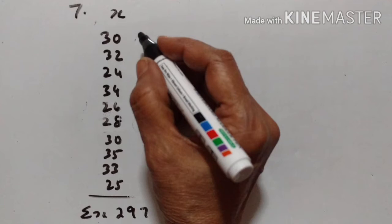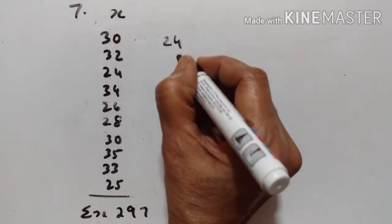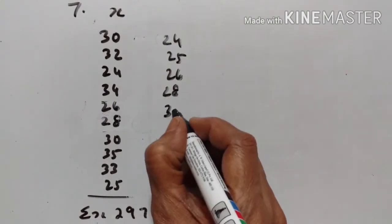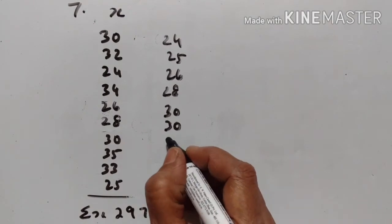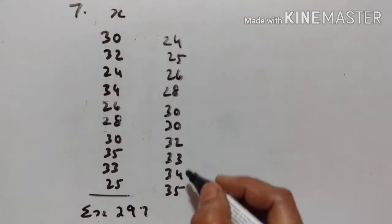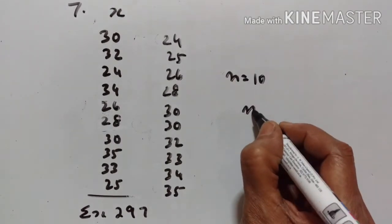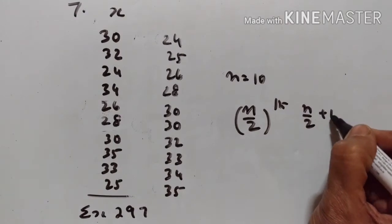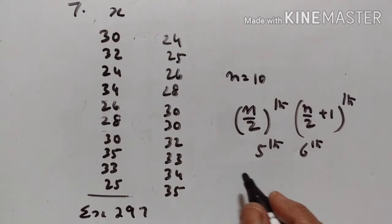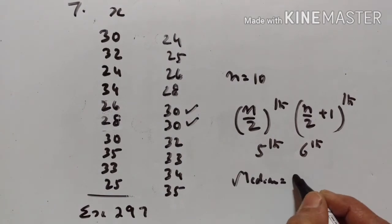Next, we have to find the median of this data. Let us write this in ascending order: 24, 25, 26, 28, and two 30s, then 32, 33, 34, 35. n is equal to 10. So n upon 2 and n upon 2 plus 1 gives us the 5th and 6th terms. The 5th and 6th terms are 30 and 30. The mean of these two is equal to 30. Therefore, median is equal to 30.